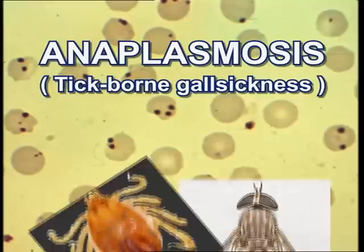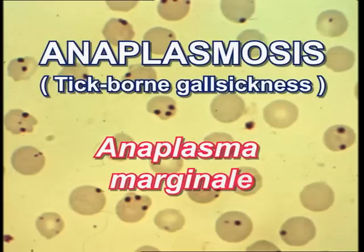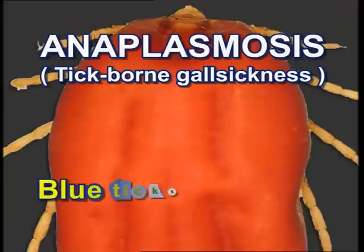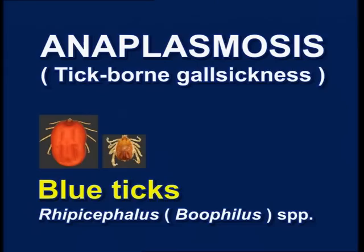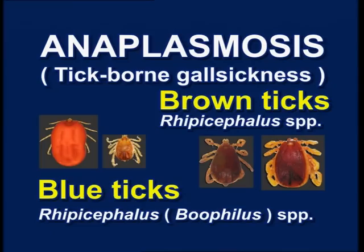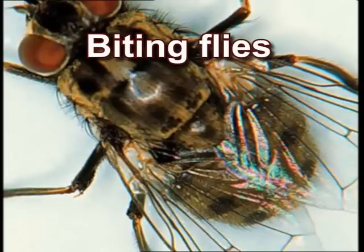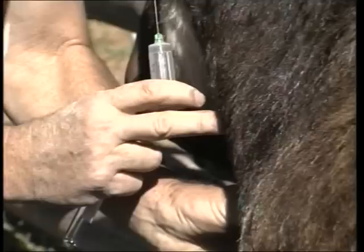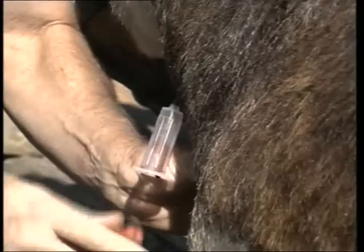Anaplasmosis, or tick-borne gall sickness in cattle, is a tick and insect-borne disease caused predominantly by Anaplasma marginale. Several different tick species have been shown to be capable of transmitting anaplasmosis in Africa. Of these, the blue ticks, Rhipicephalus decoloratus species, that also transmit babesiosis, and a number of Rhipicephalus or brown tick species, are considered to be the most important. In addition to tick transmission, anaplasmosis can also be transmitted mechanically by some biting fly species, such as stable flies and horse flies, as well as needles and instruments used in veterinary procedures which are contaminated with fresh blood.